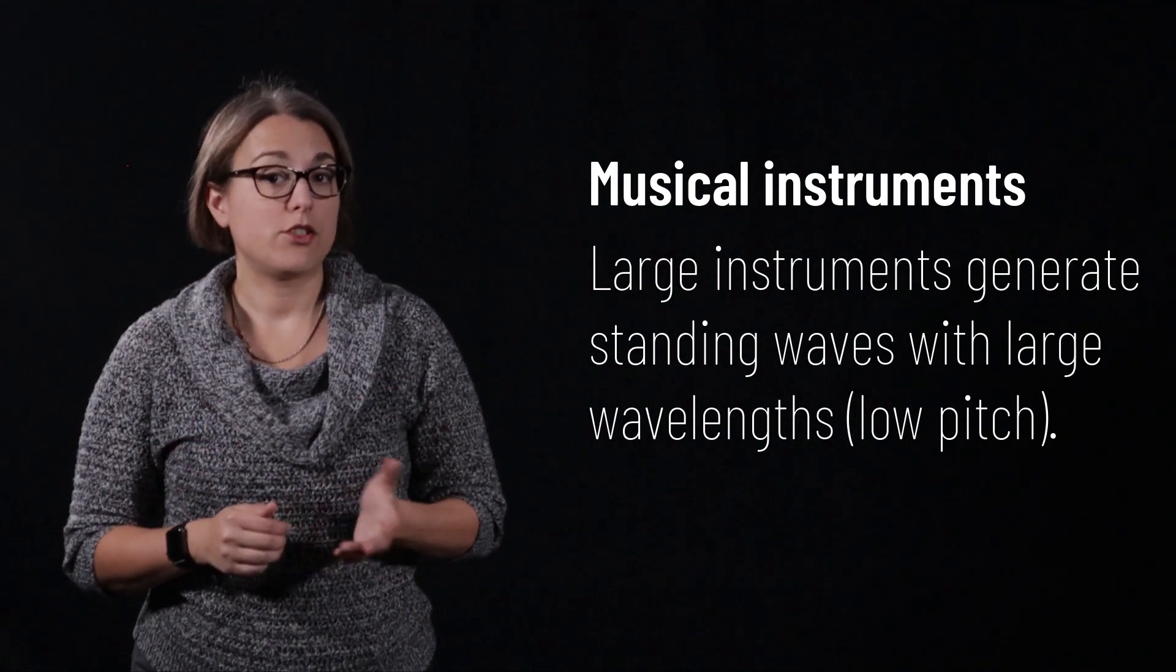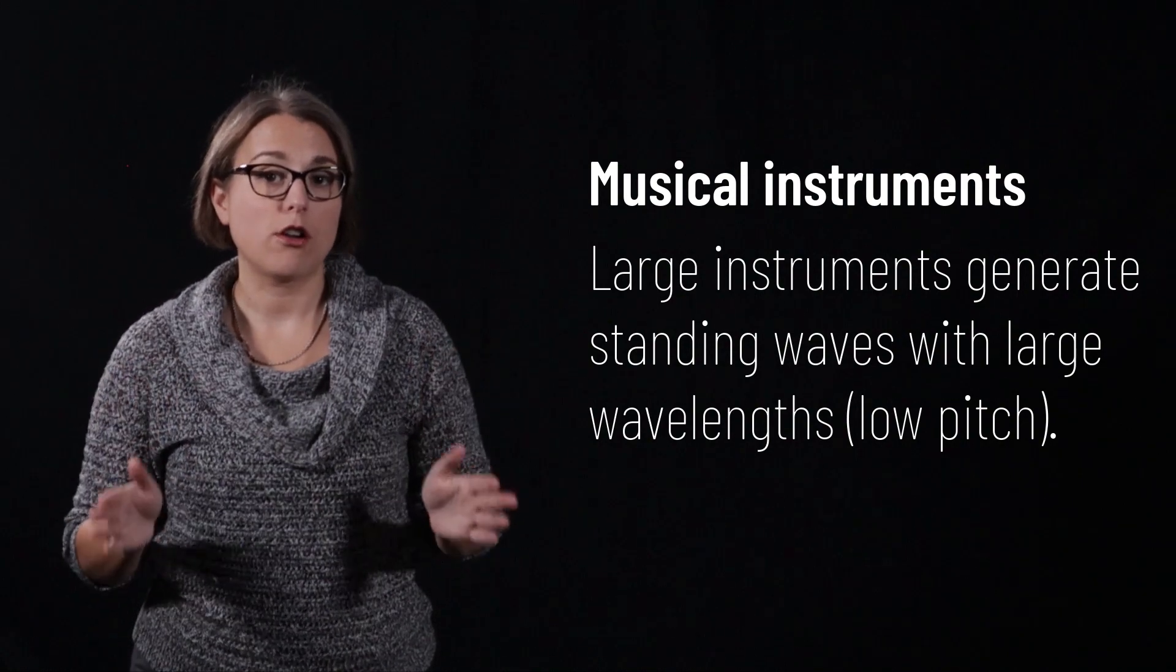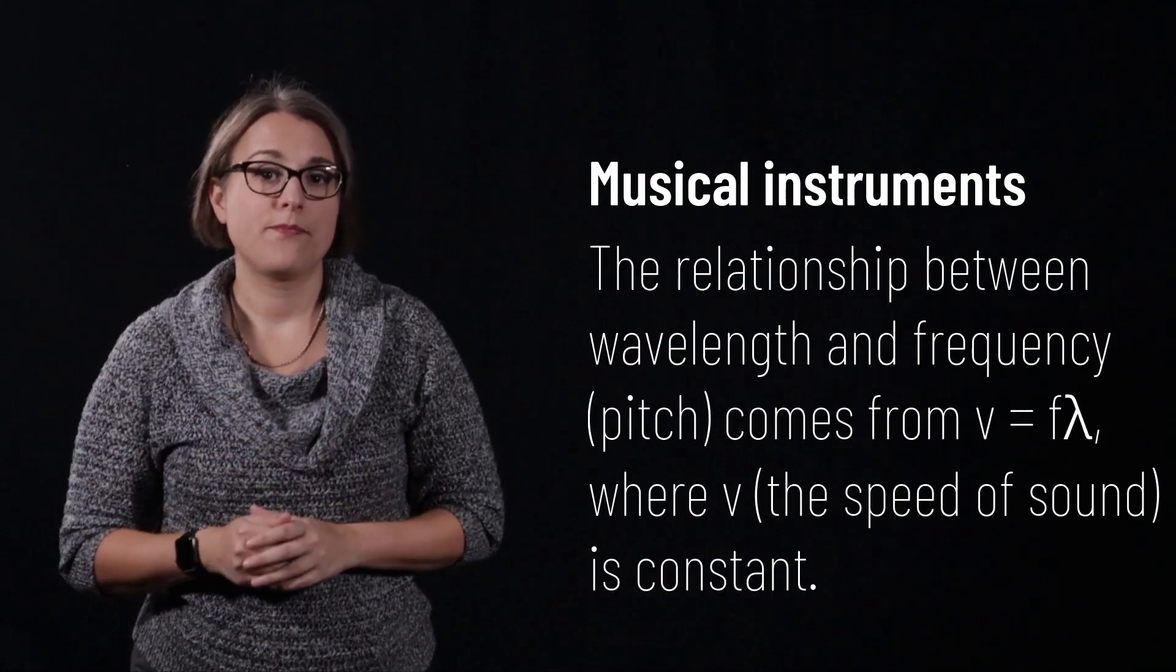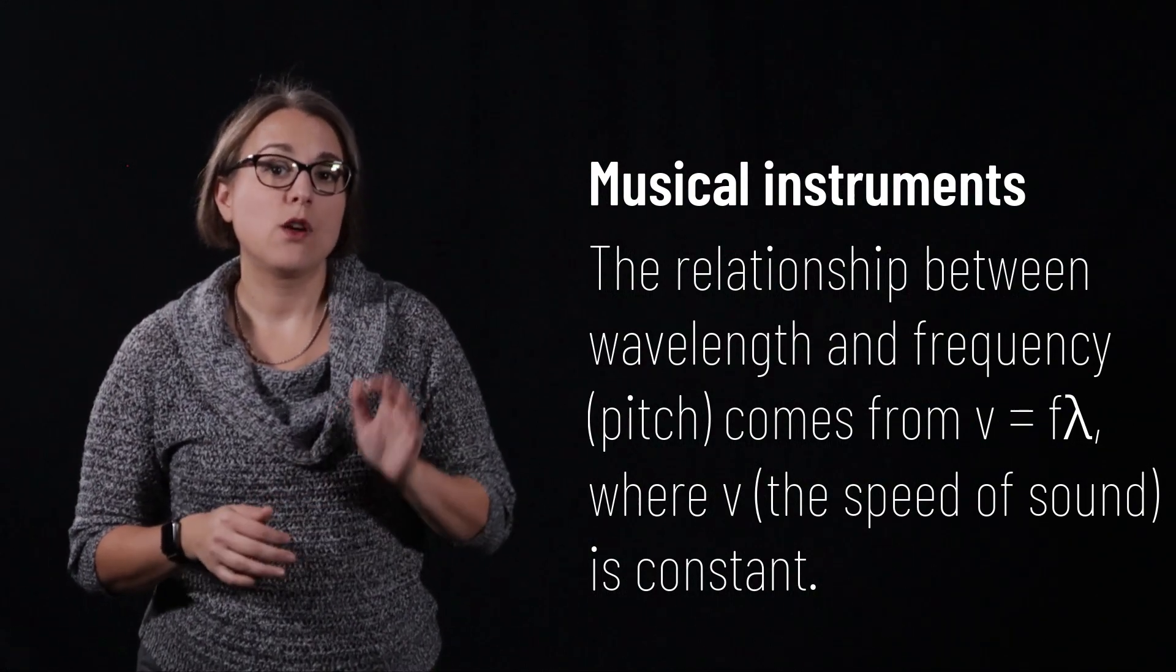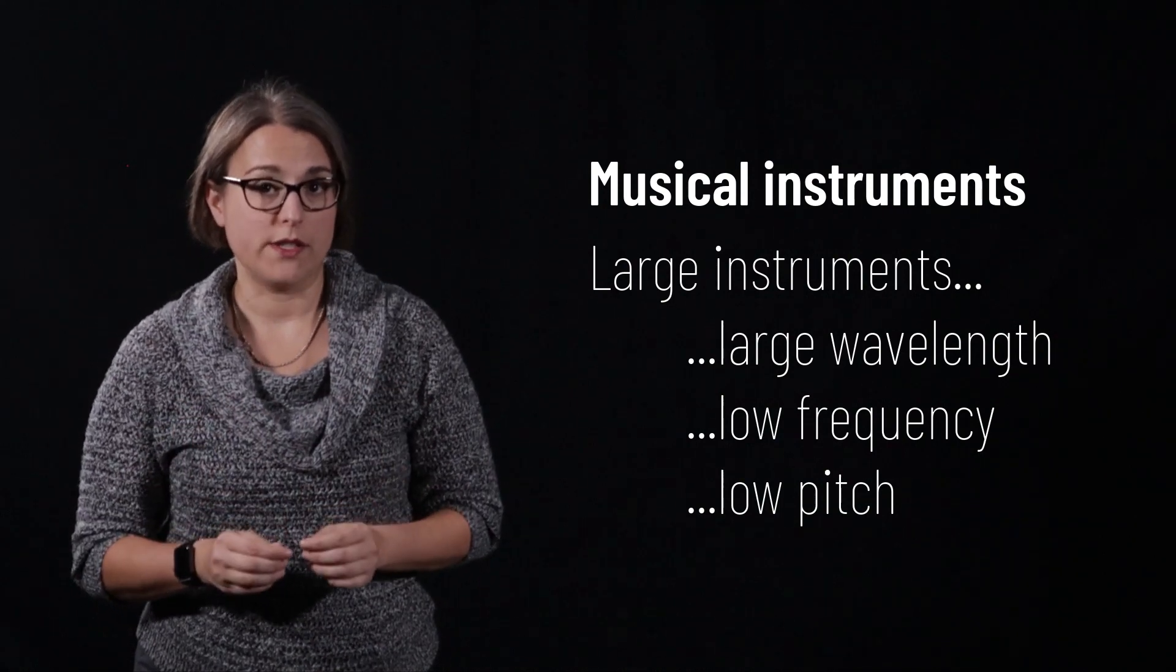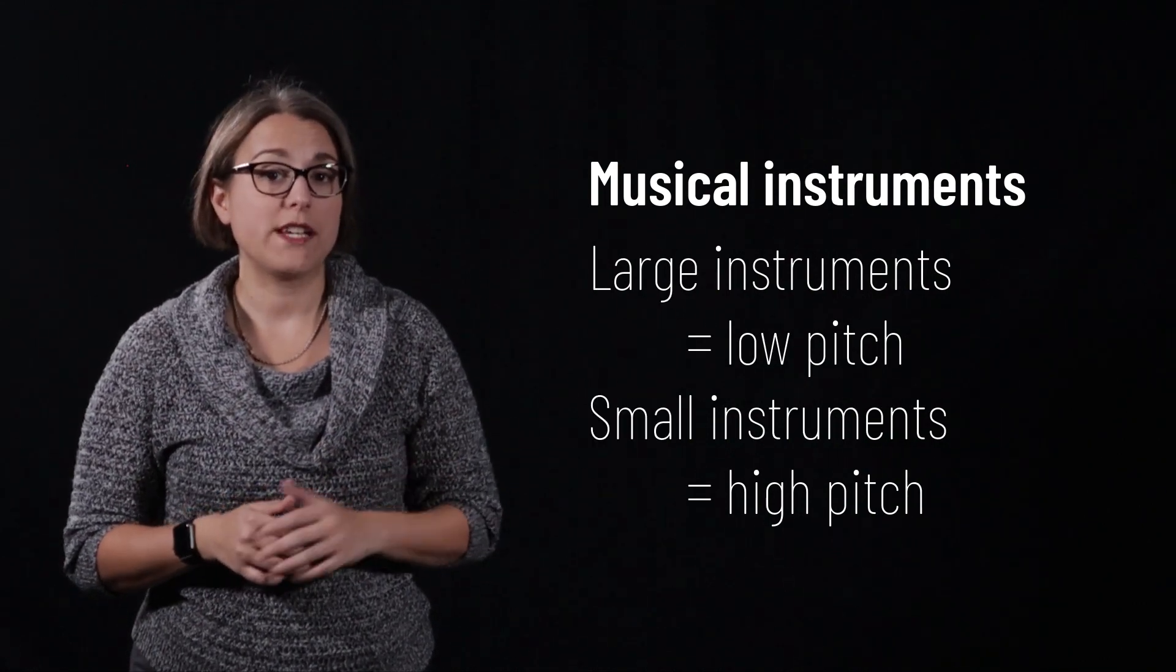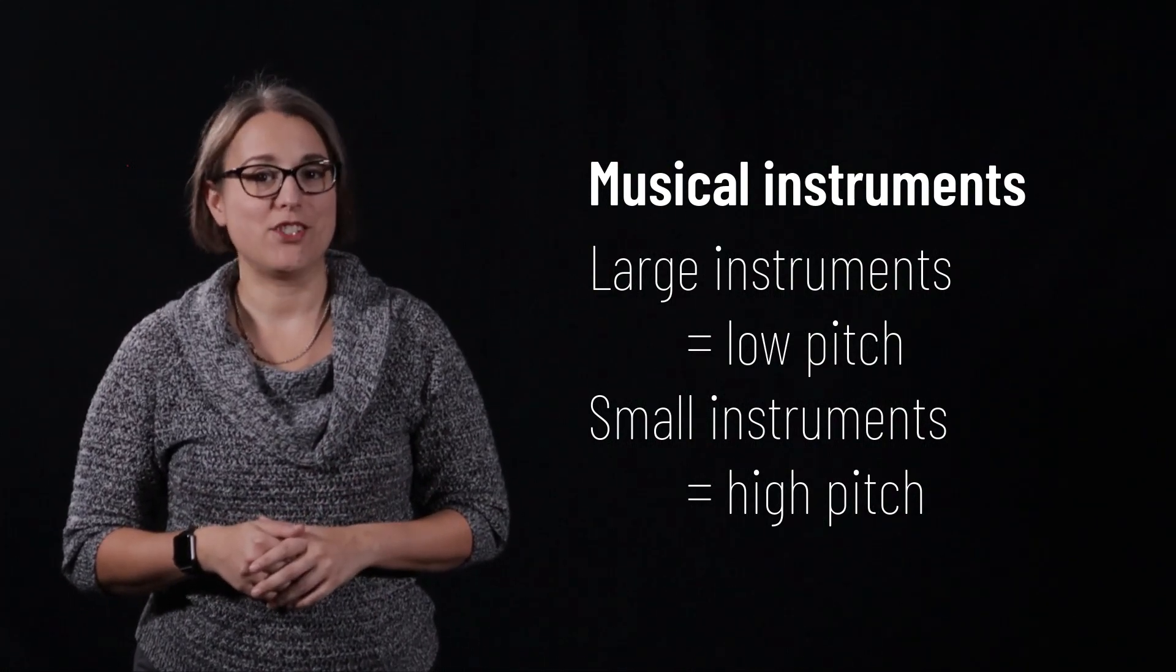Large instruments, such as a tuba or a bass violin, are capable of supporting standing waves with a large wavelength. Small instruments, such as a piccolo or kazoo, support standing waves with small wavelengths. Because of the relationship between frequency, wavelength, and wave speed, we can see that large instruments will create sound waves with low frequencies, and small instruments will create sound waves with high frequencies. This explains why large instruments create low-pitched sounds, and why small instruments create high-pitched sounds.